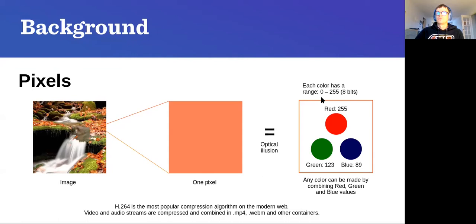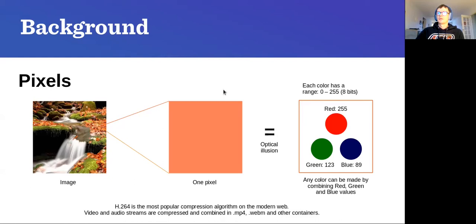So red is 255, green is 123. If one channel is zero, that color is absent; if it's 255, it is fully saturated — the brightest possible representation. If all three channels are at their maximum value of 255, mixing them together gives you white. If all three are zero, you get black.